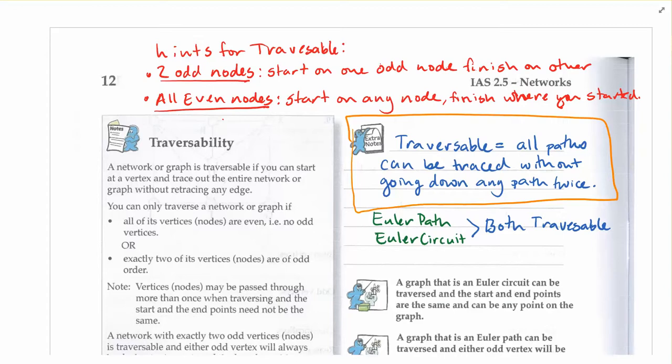A couple things to remember: an Euler path will have two odd nodes and an Euler circuit will be all even. We can use those same hints that helped us identify whether things were an Euler path or an Euler circuit to help determine whether things are traversable or not.